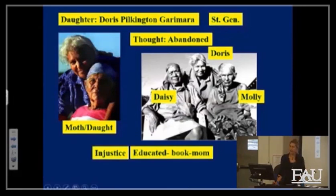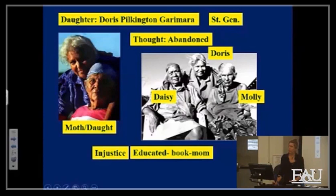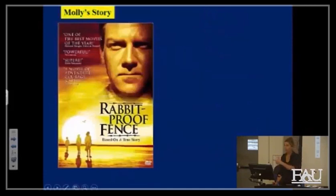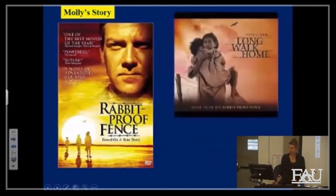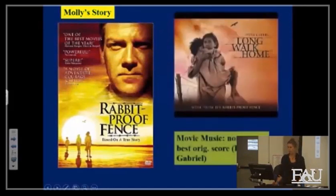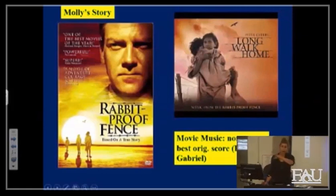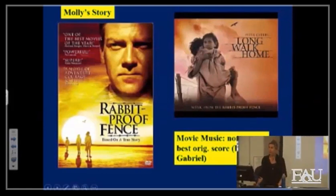These are the real people. The injustice is hard to even put into words. When the daughter talks about it, she says it was so terrible, but she also said she got educated in a different way, which allowed her to write a book about her mother. Doris died in 2004. Rabbit Proof Fence is what you will see — the story of Molly coming back.